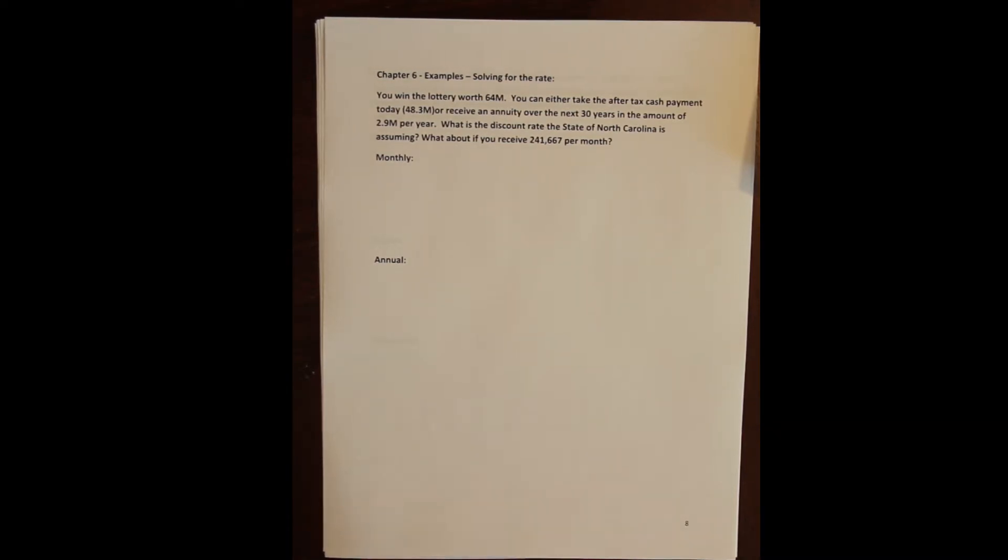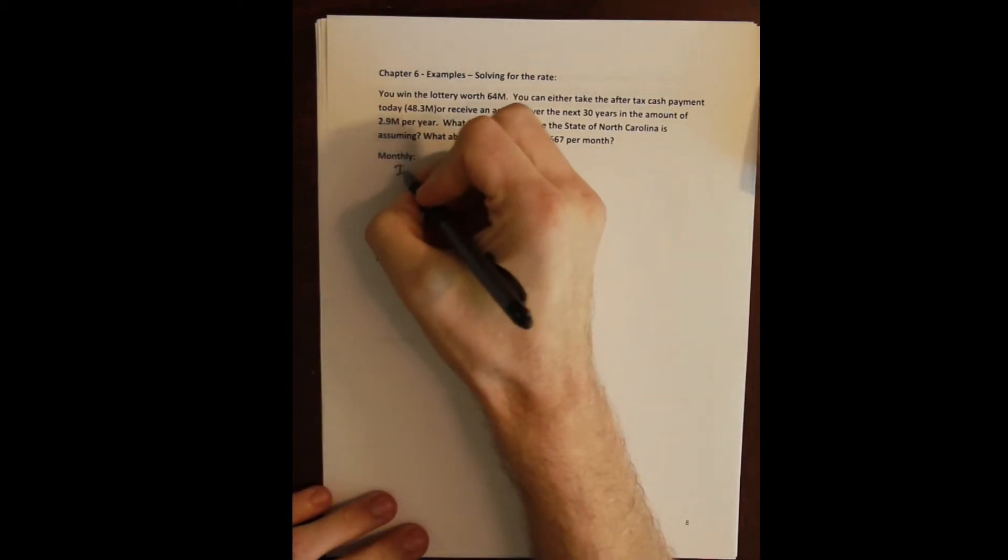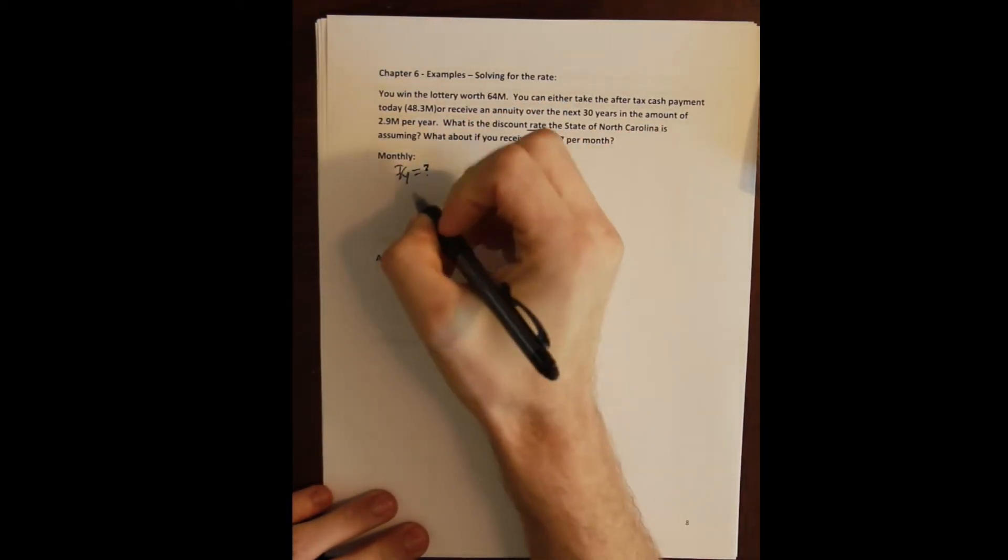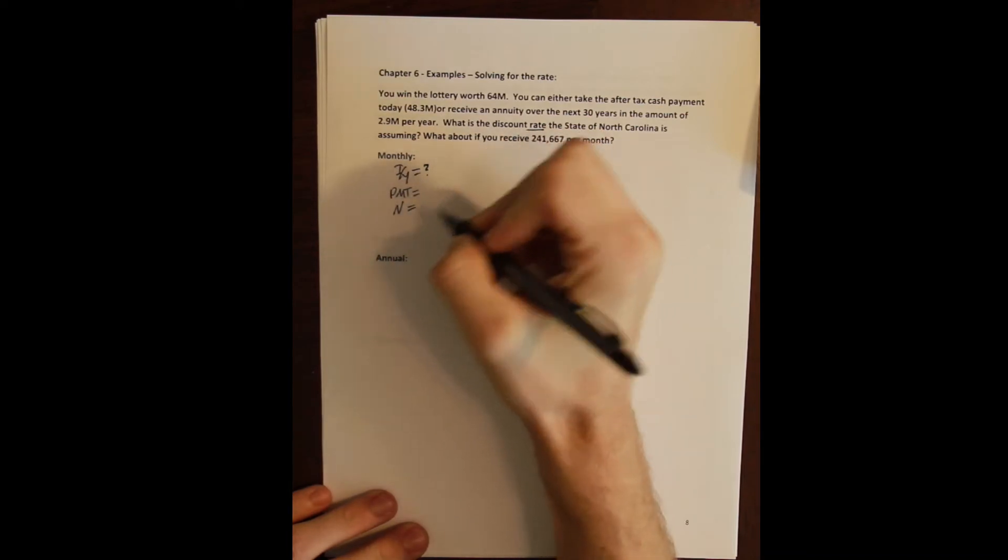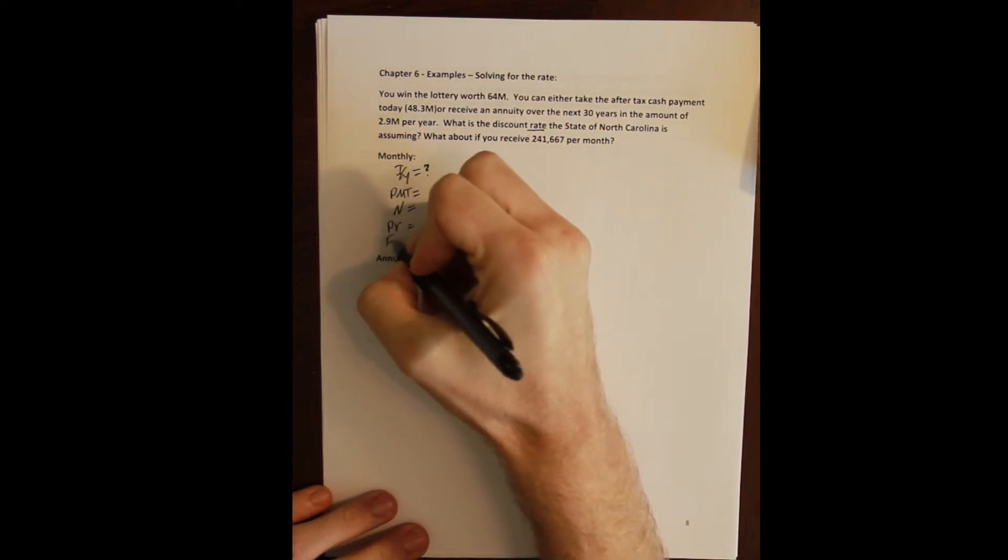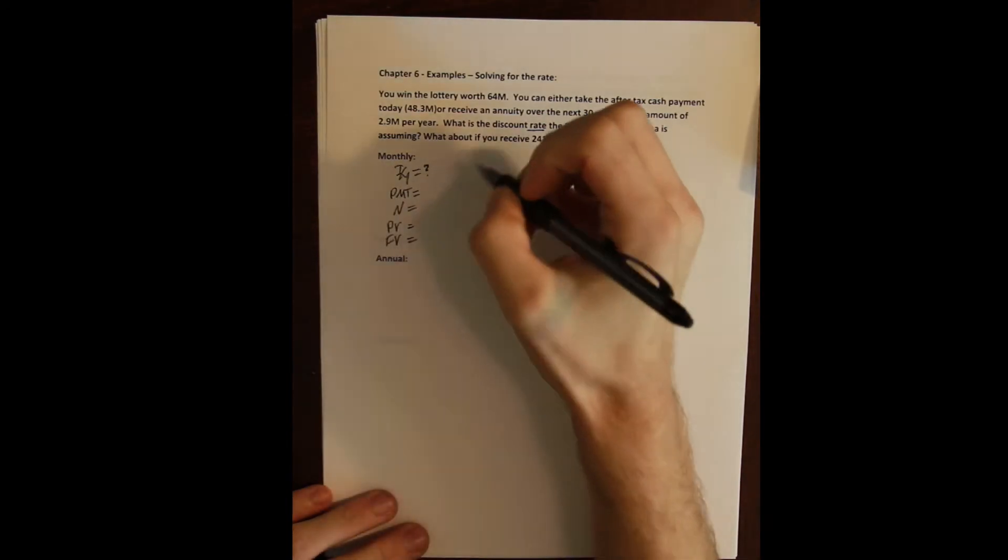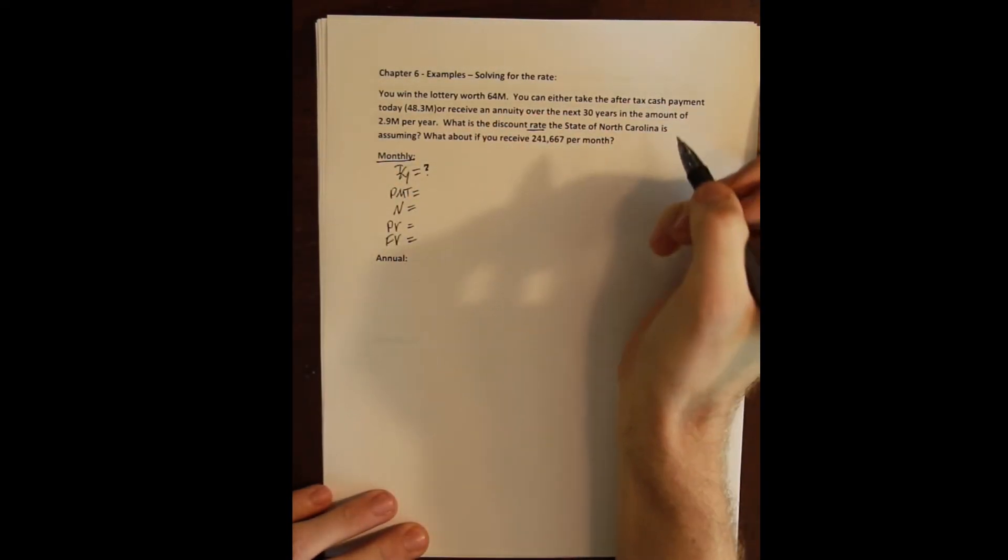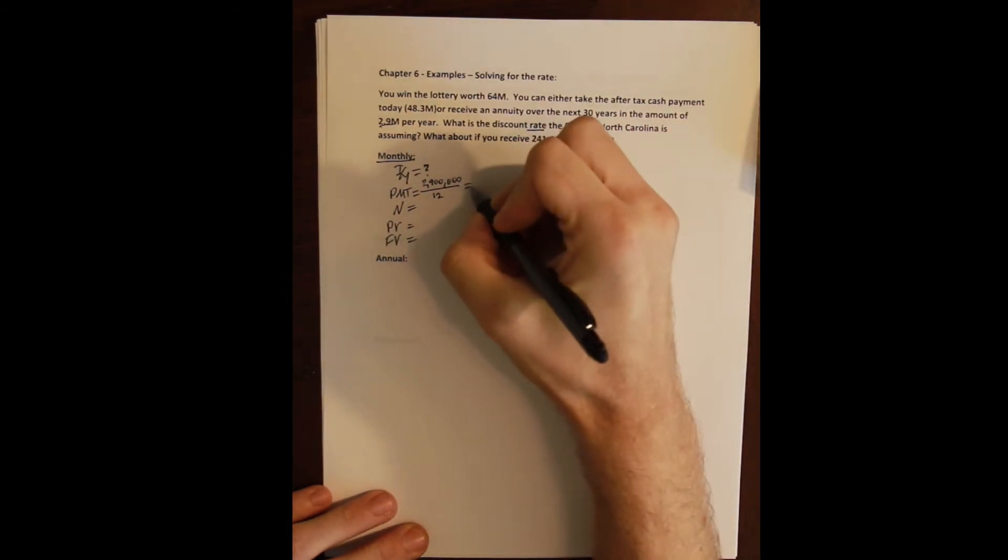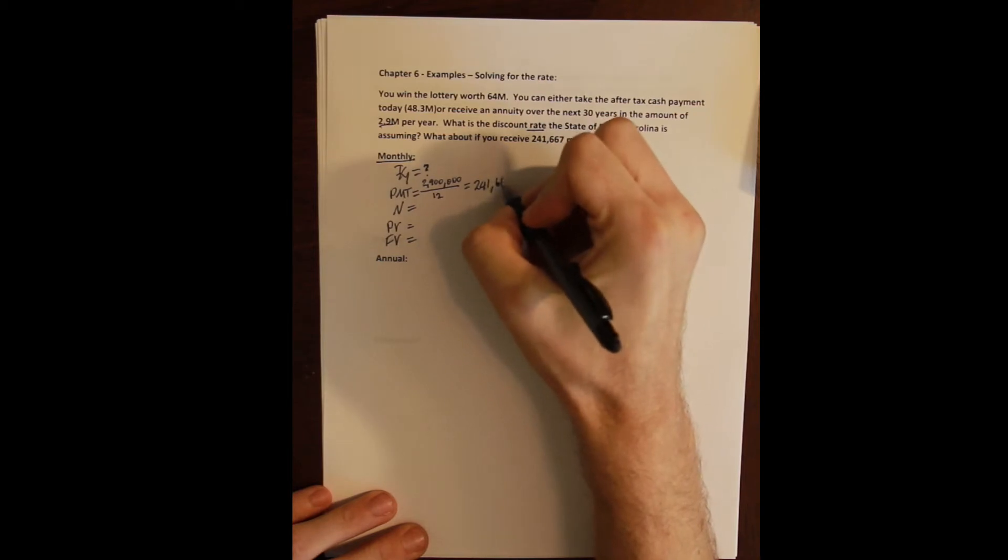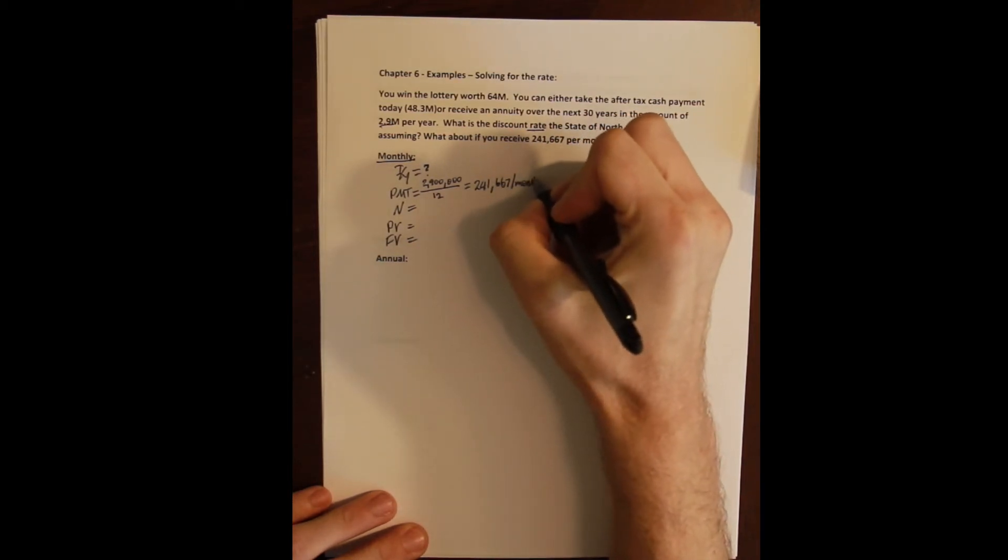Okay, so we'll start with the monthly payment. We are trying to solve for the discount rate, and so that's our I/Y. To solve for the I/Y we need the other four pieces: we need the payment, the number of payments, the present value, and the future value. Now, the payment here we are going to do monthly compounding, so we need to convert our annual payment to a monthly payment. We do that by dividing the annual payment by the number of months in a year, and that gives us a payment of $241,667 per month.